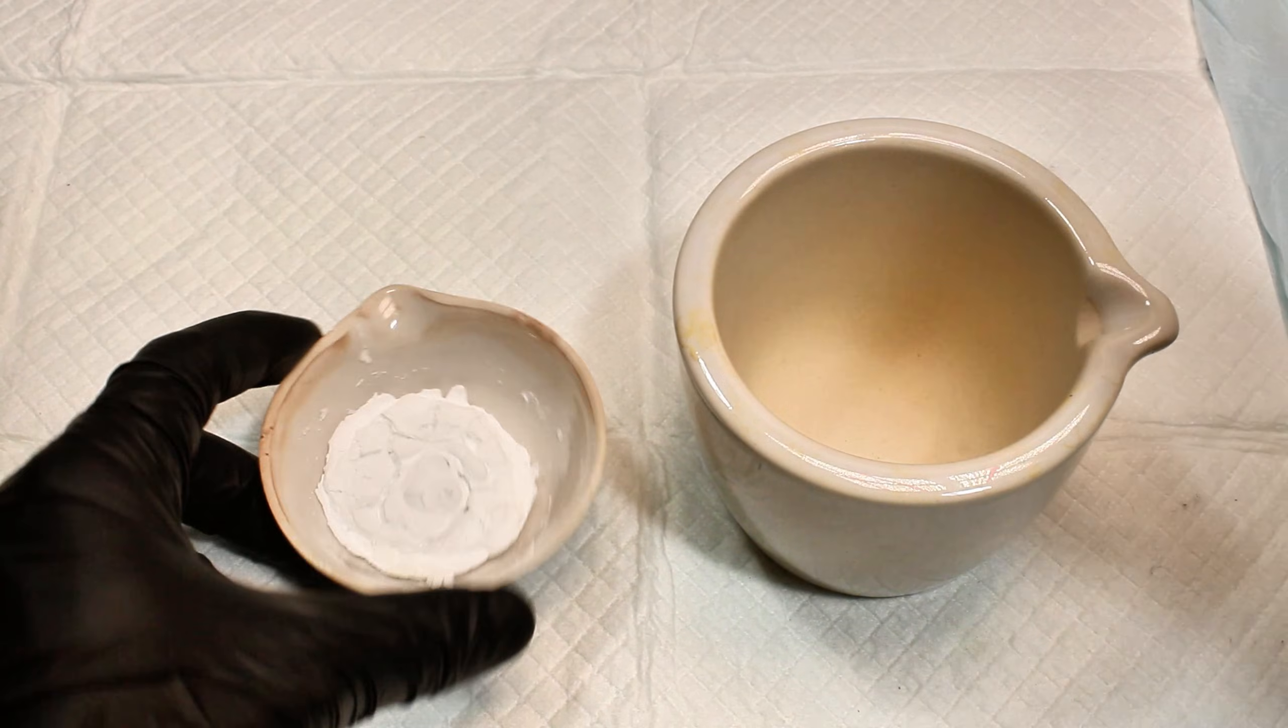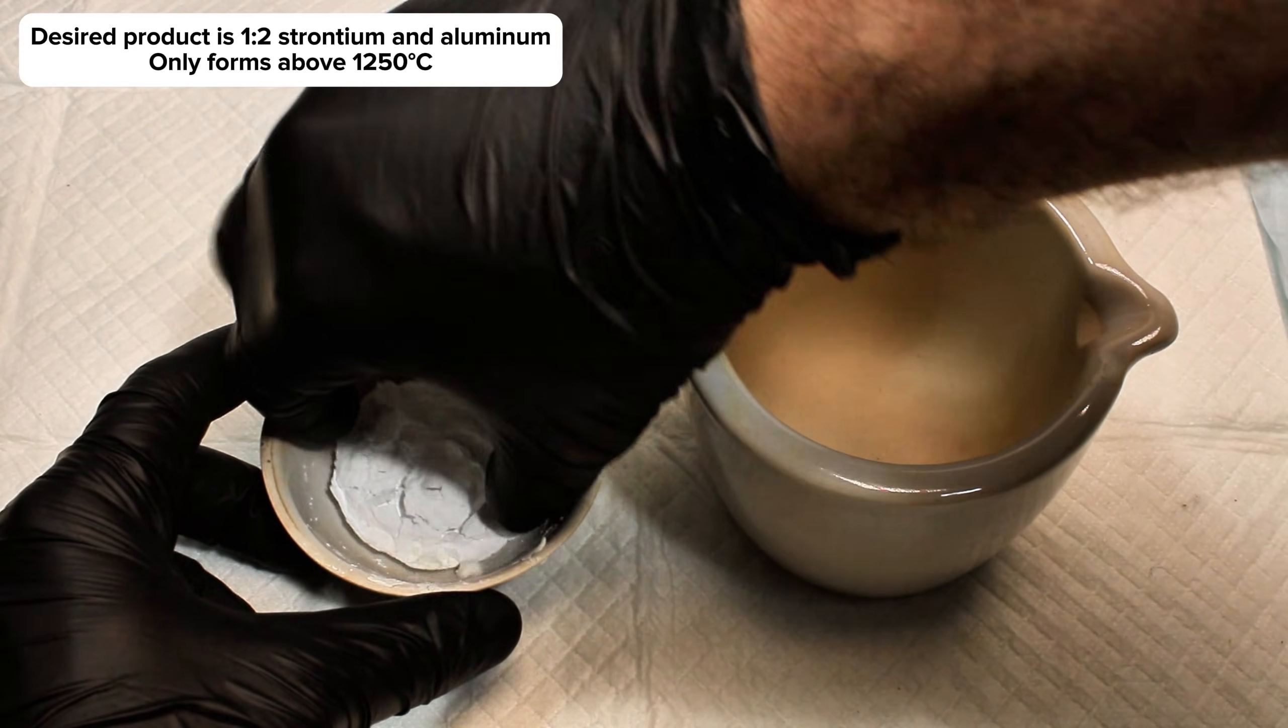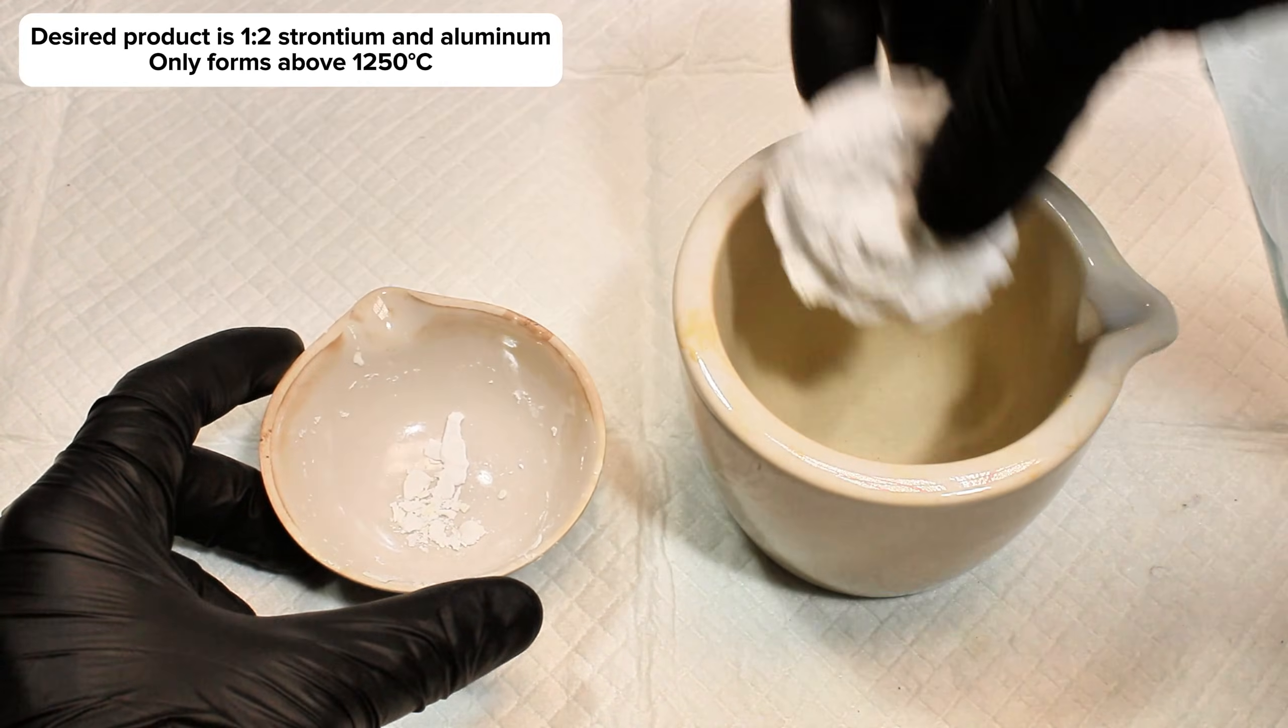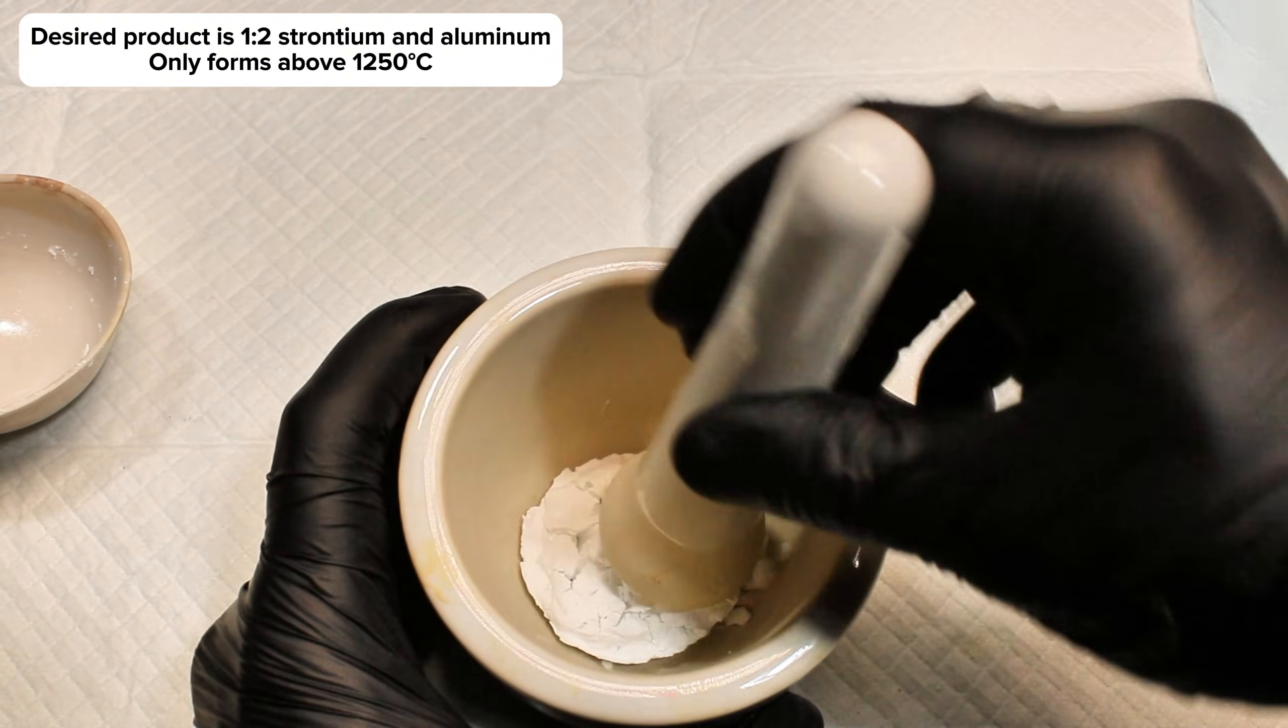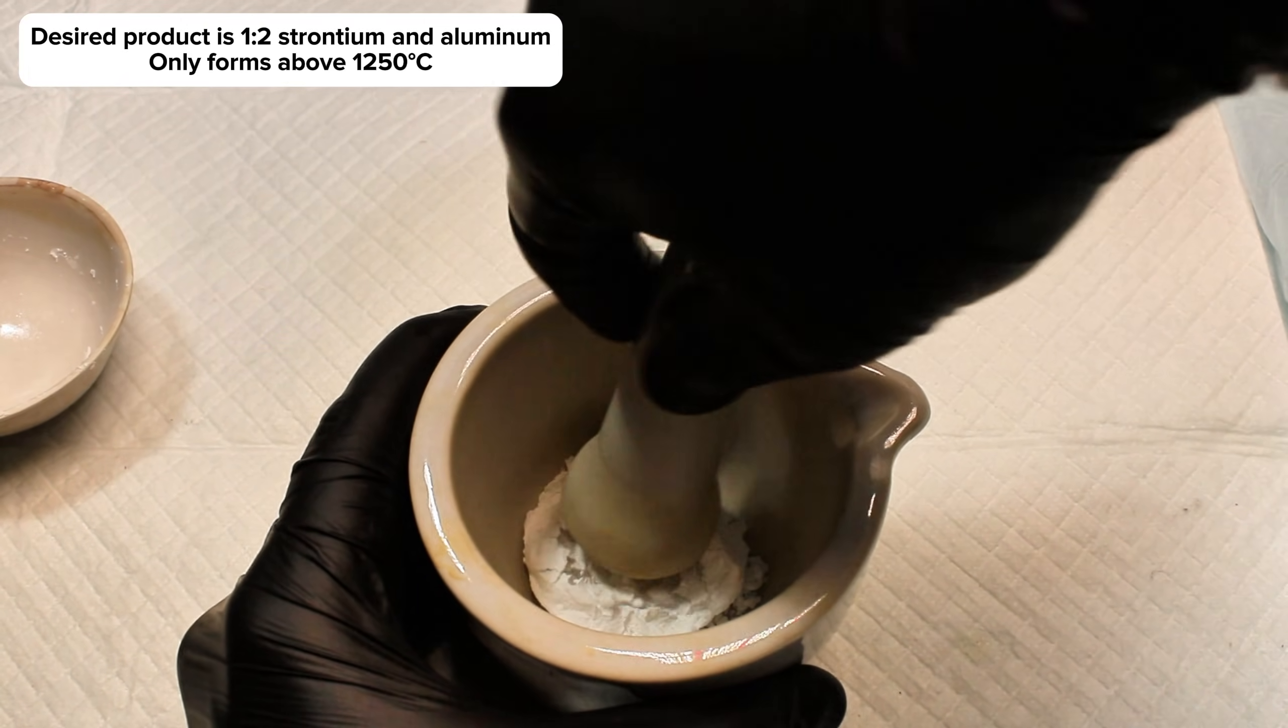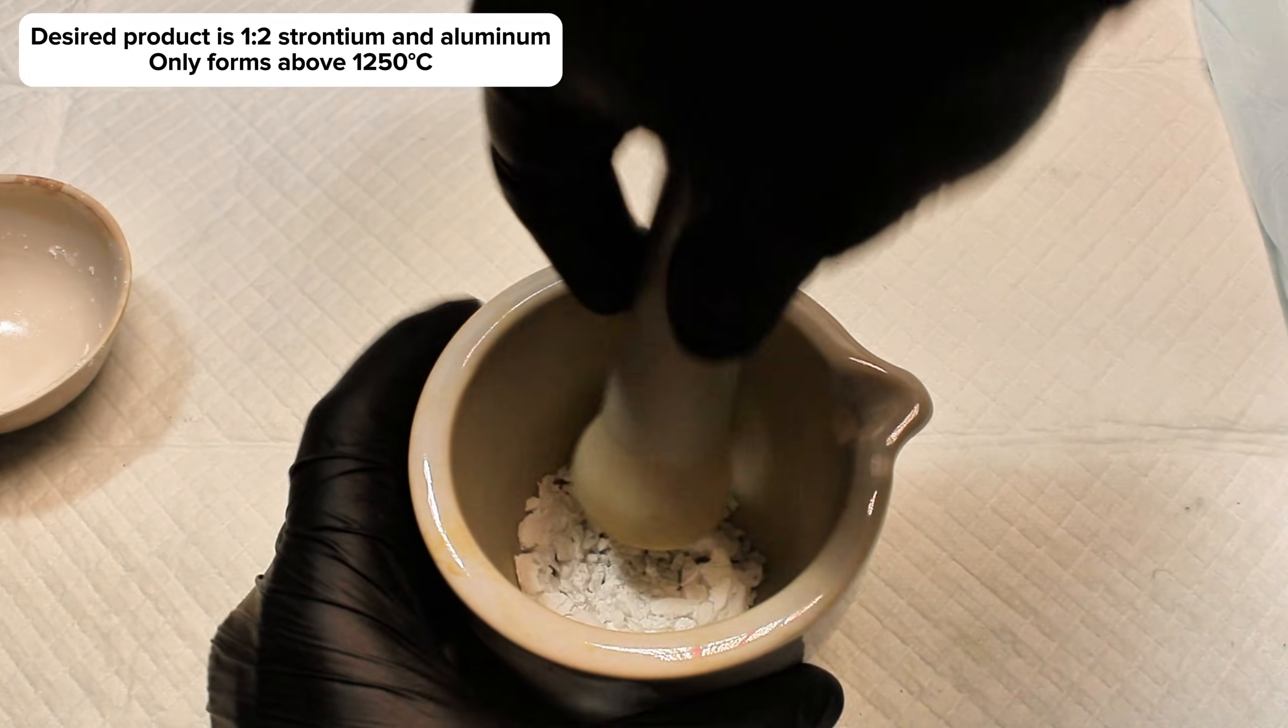Simply doing it this way as I had been results in the formation of inconsistent strontium aluminates with a variety of empirical formulas. These will still glow to varying degrees and intensities, but to produce the 1 to 2 desired ratio of strontium and aluminum, the mixture must be heated to at least 1250 to 1500 degrees Celsius, which my poor kiln was clearly not able to reach in a mere 15 minutes.